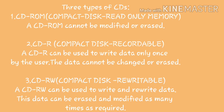There are three types of CDs. First is CD-ROM, that is compact disk read-only memory. A CD-ROM cannot be modified or erased, and data can be written only once by the user. Once this is done, the data cannot be changed or erased. Second is CD-RW, that is compact disk rewritable. A CD-RW can be used to write and rewrite data, and the data can be erased and modified as many times as required.